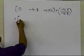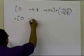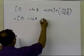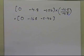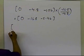And this is going to give me what? It's going to be 0, minus 16.8, minus 5.46. That's what I'm going to get by multiplication. And now what I have to do is I have to subtract this from the third row.